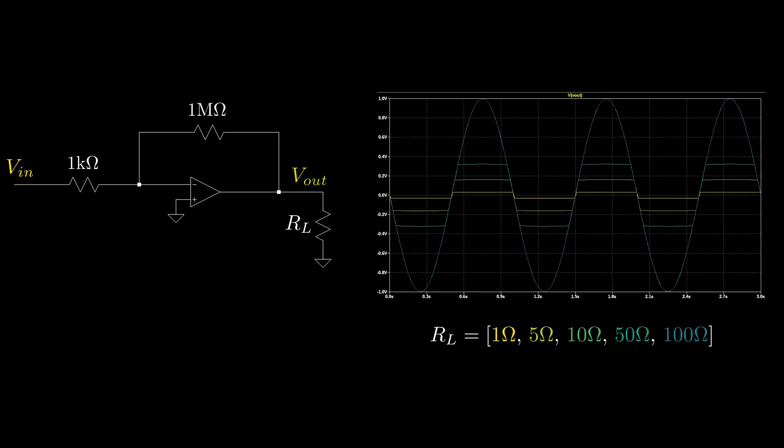The main takeaway from this is once the load resistance is large enough, in this case over 50 ohms, the load resistance has a negligible effect on the amplifier. That means we can safely ignore the load resistor in our analysis. Very generally, most op-amps can provide around 10 to 20 milliamps maximum.